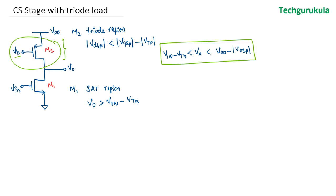So the advantage of having a triode load is it's going to take a very small voltage headroom because of this fact that VDSP magnitude should be less than magnitude of VGSP minus magnitude of VTP.